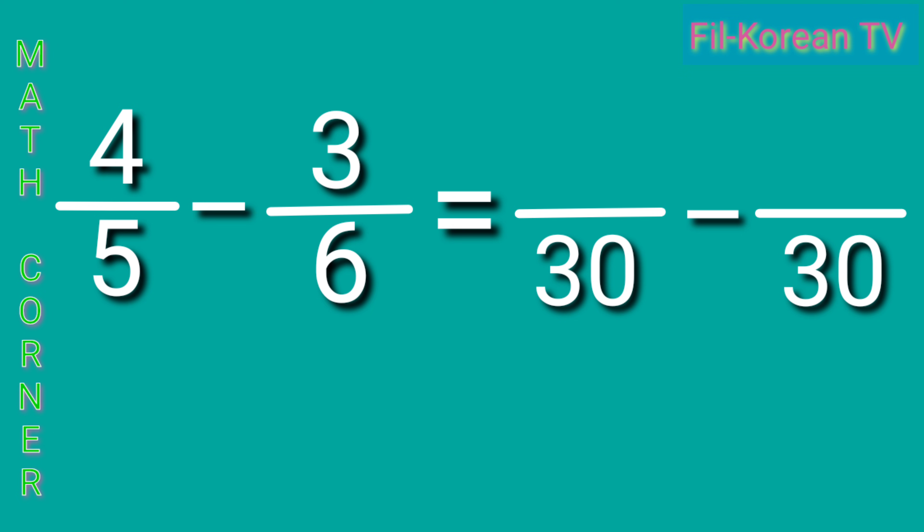30 divided by 5 equals 6 times 4 equals 24. The other one, 30 divided by 6 equals 5. 5 times 3 equals 15.